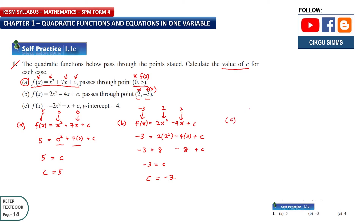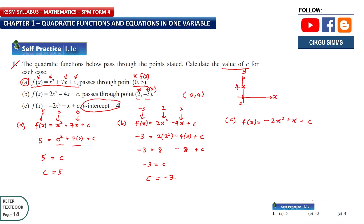For question c, f(x) = -2x² + x + c. Instead of a coordinate, it gives a y-intercept of 4. The y-intercept means when x = 0, y = 4. So the coordinate is (0, 4). This means x = 0 and f(x) = 4.